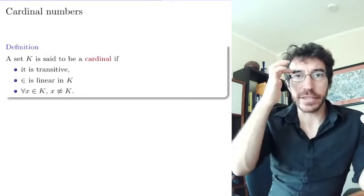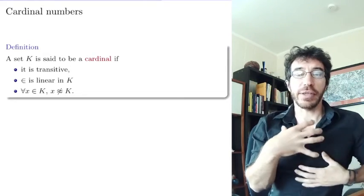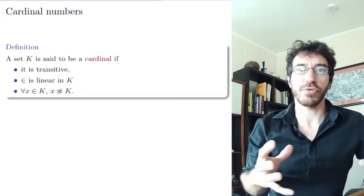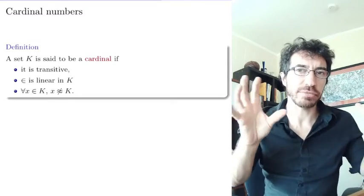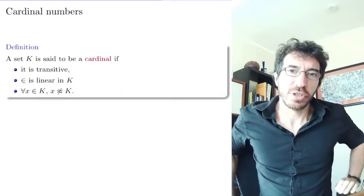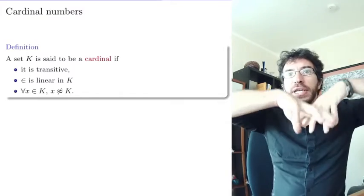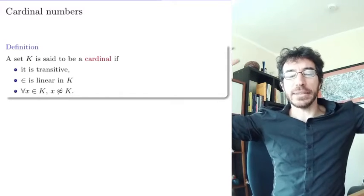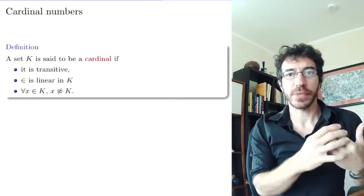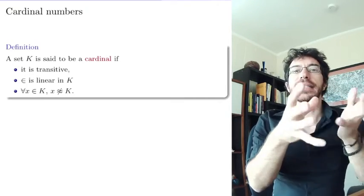For the infinite case, so far what we know, how we measure sizes, is by an equivalence relation. Again, it's not an equivalence relation because we're talking about all sets, but we know when two things have the same size. But what do we call that size?